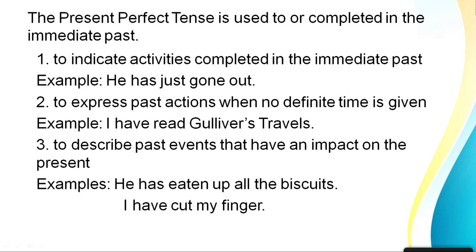Present perfect tense is used to show that an action is completed in the immediate past, or to express past actions where no definite time is given. For example, 'I have read some book' — you don't know when. If you say 'I ate my lunch at two o'clock,' the time is specified, but 'I have already eaten' means the time is not specified. It's also used to describe past events that have made an impact on the present, like 'I have cut my finger' — so obviously you are bleeding.